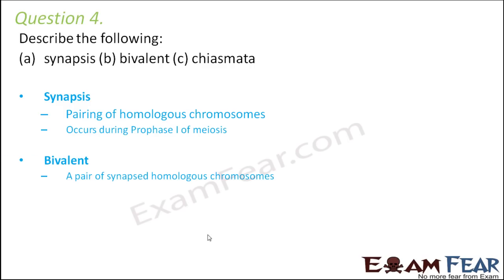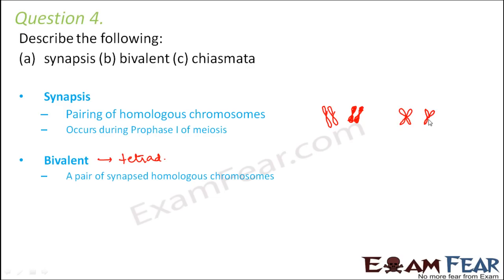Bivalent is another name for tetrad — when the homologous chromosomes group together to form a group of four chromosomes, a pair of synapsed homologous chromosomes. First synapsis takes place: suppose this is the maternal chromosome and this is the paternal chromosome — they will pair up. In the bivalent, these two get combined to form a group of four, where each represents one chromosome. So this forms a bivalent or a tetrad.